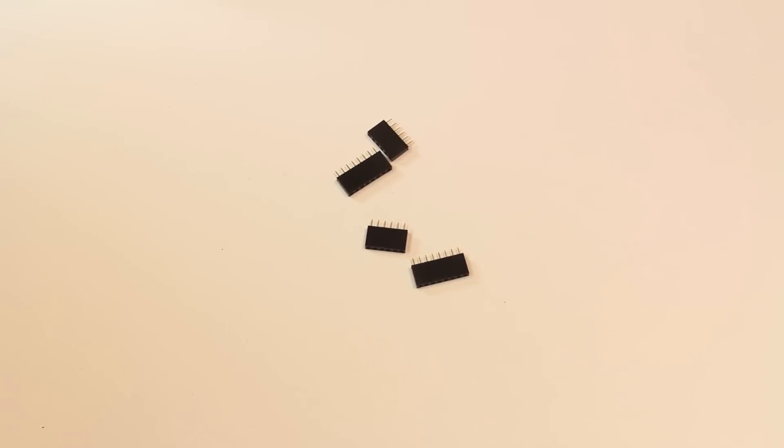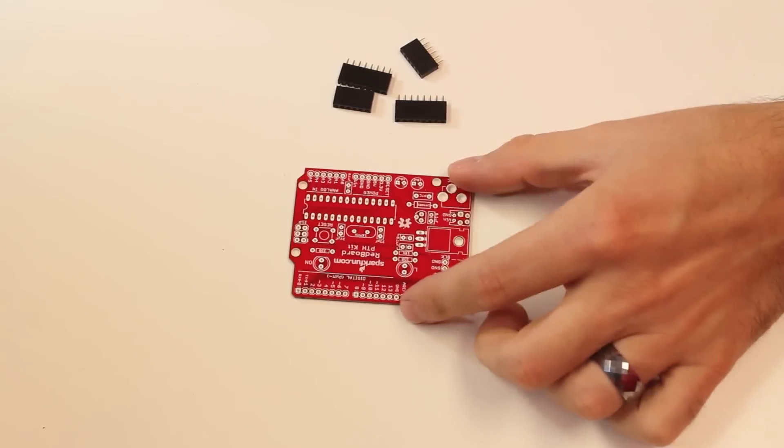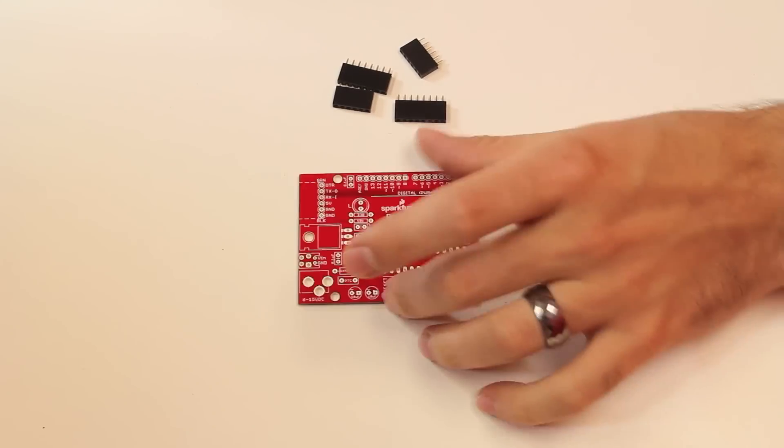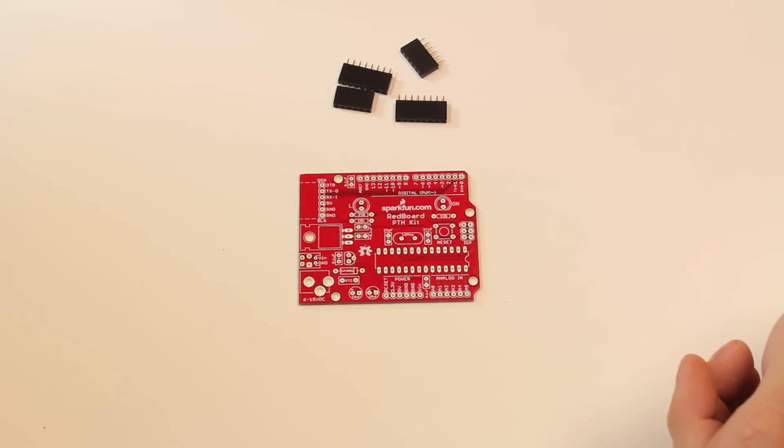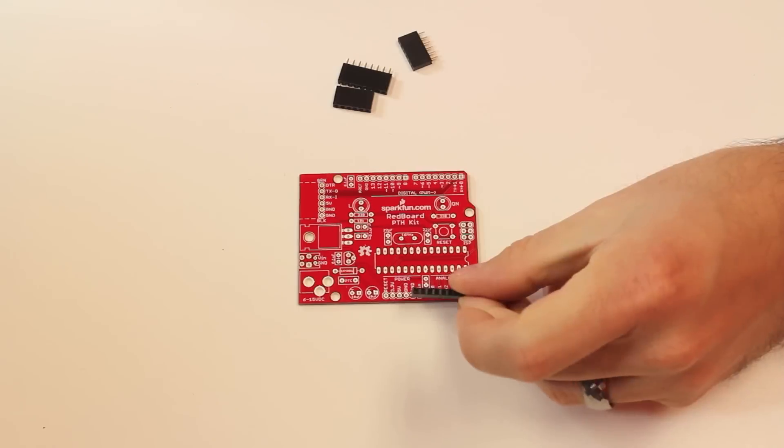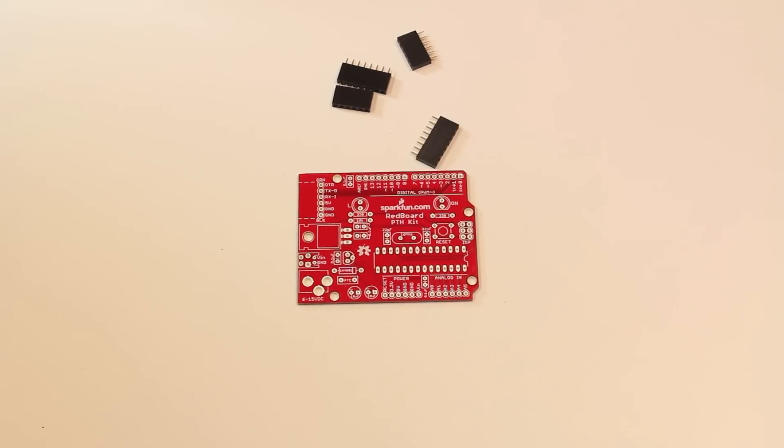We've got some headers over here. Behind this little insert, we've got the main PCB, which you can see is pretty much the same form factor as an Arduino. So it is compatible with the shields. So you just pop these in there and you can use any Arduino shield.